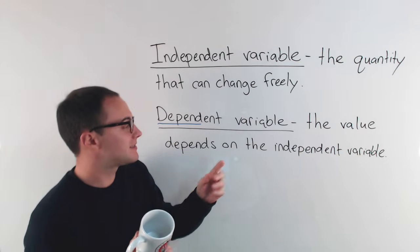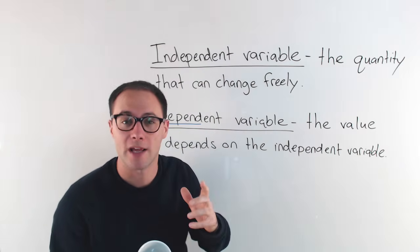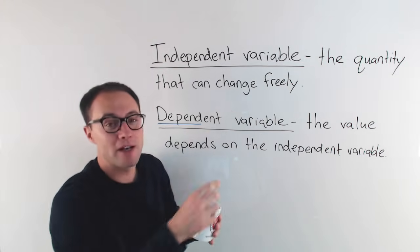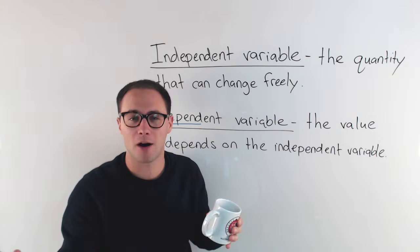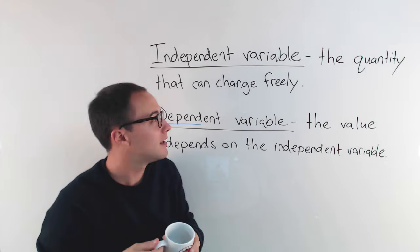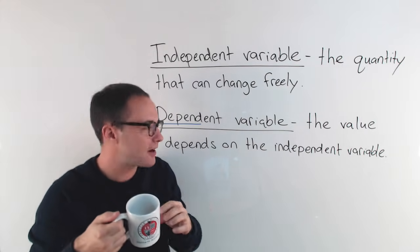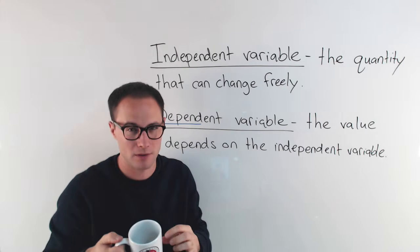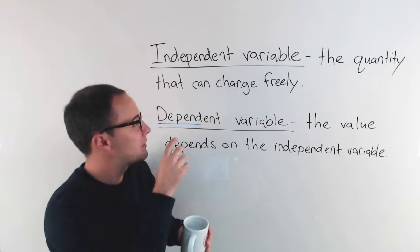Because how much is left depends on how much I already drank. The independent variable would be how much I drank, right? I can decide that on my own. I can take one sip, I could take two, I could do the whole thing. So how much I drink would be the independent variable. How much is left would be the dependent variable because it depends on how much I drink. So hopefully that helps keep them clear.